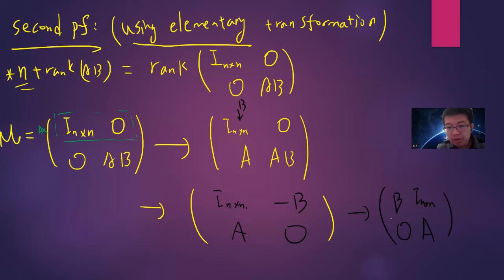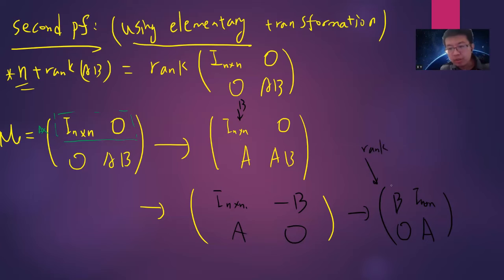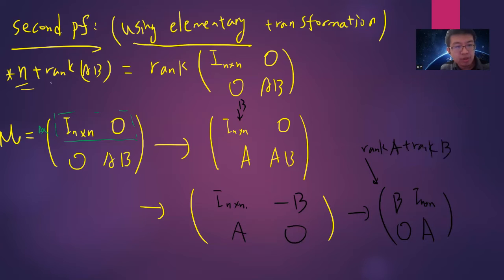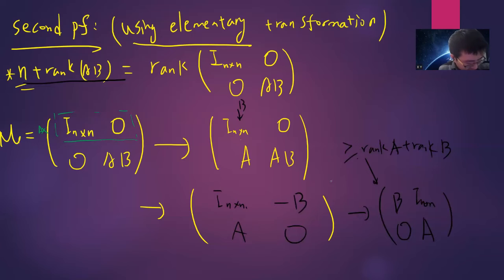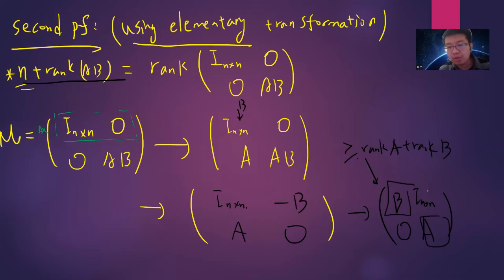This final matrix has rank at least rank(A) + rank(B), because even if you replace the identity block it's still at least rank(A) + rank(B). So the chain of equalities gives rank(A) + rank(B) ≤ n + rank(AB), completing proof two.